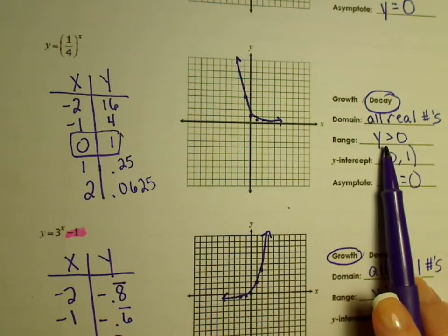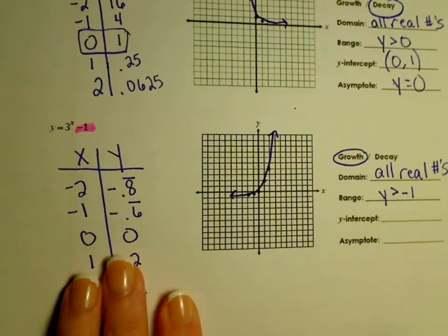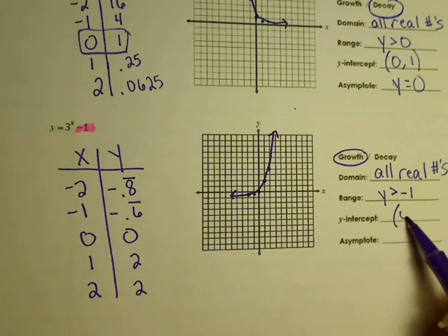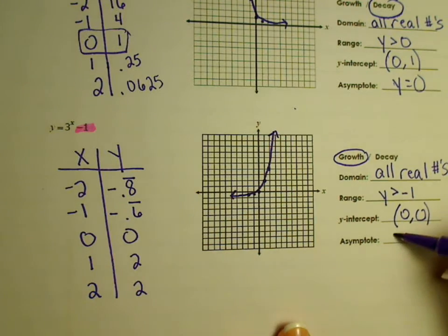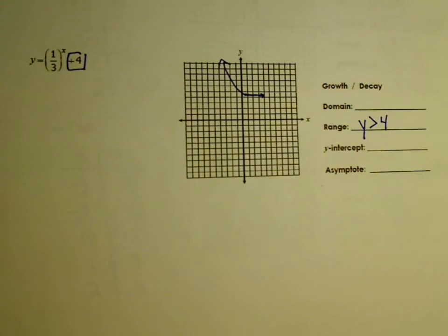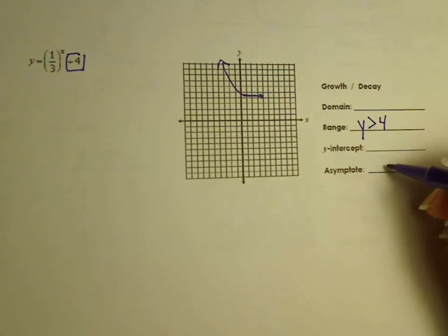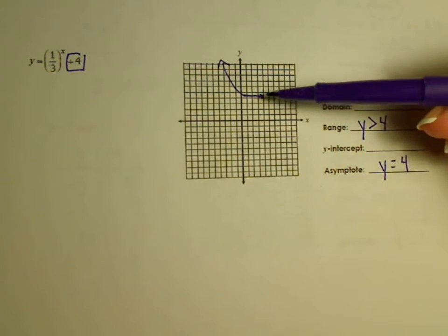Every y is above the negative 1 because negative 1 is the lowest point. The y-intercept is (0, 0). And the asymptote is what's the lowest point it goes to — this goes as low as negative 1, so the asymptote is y equals negative 1. For a problem with plus 4, the asymptote would be y equals 4 because it does not go below 4.